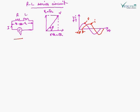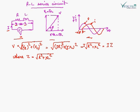In the RL series circuit, the phasor diagram and waveform of voltage and current are shown. The voltage across resistance is VR and the voltage across the inductor is VL. V is the RMS value of the applied voltage and I is the RMS value of the resultant current. The applied voltage equals the square root of VR squared plus VL squared. VR equals IR and VL equals I times XL. The impedance Z equals the square root of R squared plus XL squared.